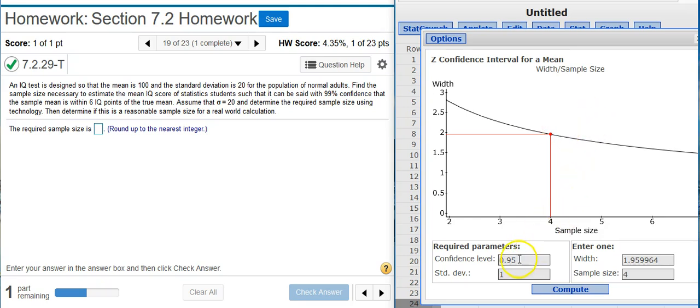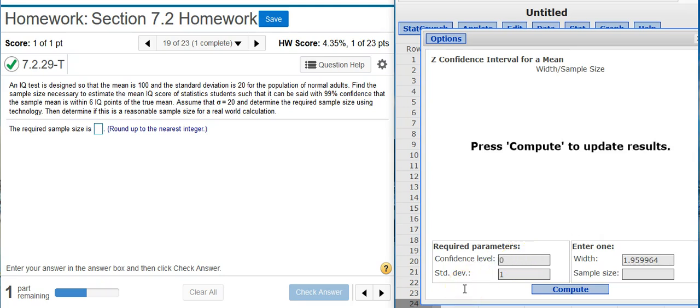Down here are my input fields. I'm going to select the confidence interval we want is 99%. Our standard deviation, we said here was 20.